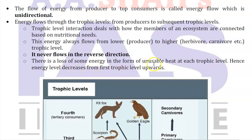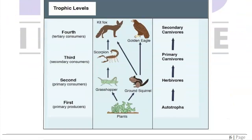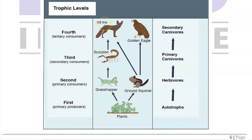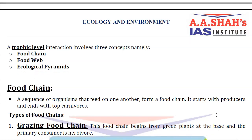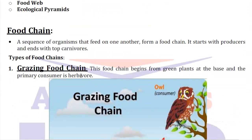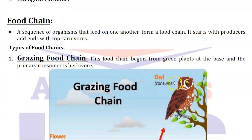So energy level decreases from the first trophic level upwards. The trophic levels go from primary producers - that is, plants or autotrophs - to primary consumers which are herbivores, then to primary carnivores who eat herbivores, and secondary carnivores who eat primary carnivores. Energy flow is unidirectional from primary producers up the food chain. A trophic level interaction involves three concepts: food chain, food web, and ecological pyramid. A food chain is the sequence of organisms that feed on one another, from producers to top carnivores.